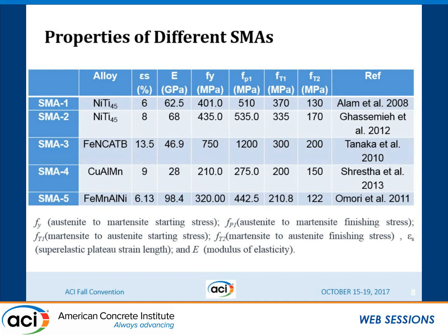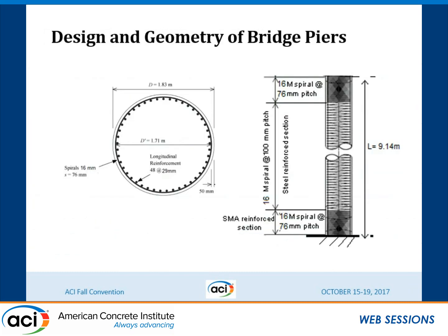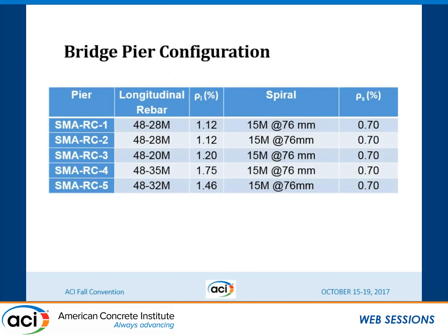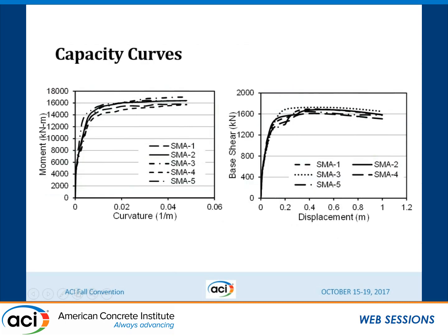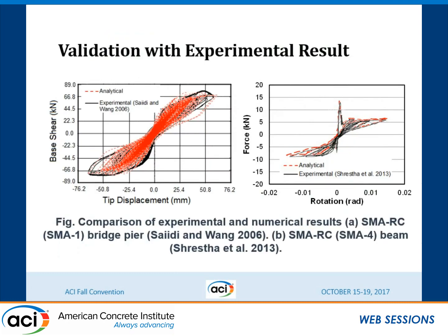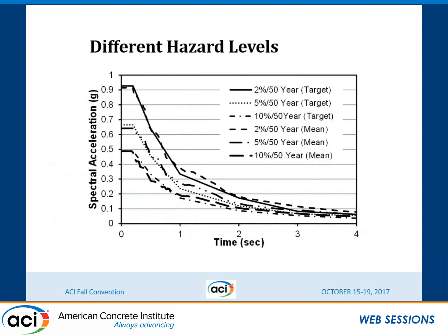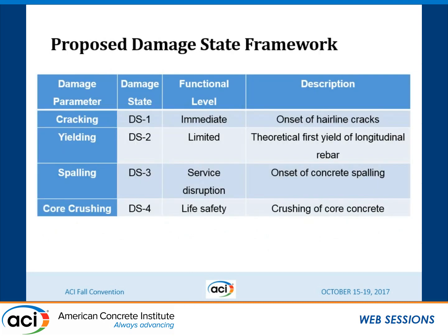In the design example, we considered five different types of shape memory alloys with different properties. Using all five alloys, we designed a bridge that is 9.14 meters long and 1.83 meters in diameter, with different reinforcement ratios for each alloy. We verified that all columns have similar capacity in terms of moment-curvature and base shear-displacement. The model in SeismoStruct was validated against shake table tests and reverse cyclic load tests. Hazard levels were defined per the Canadian Highway Bridge Design Code, with 10 different earthquakes matched to the spectra.